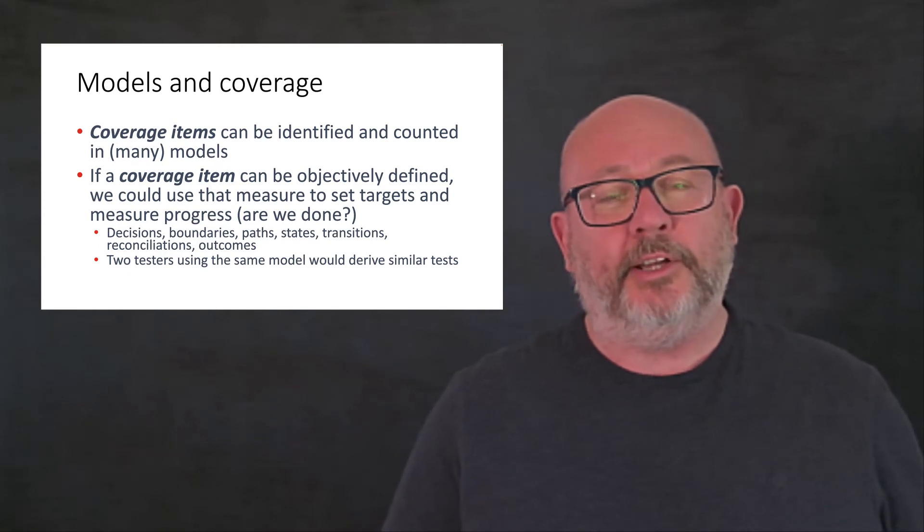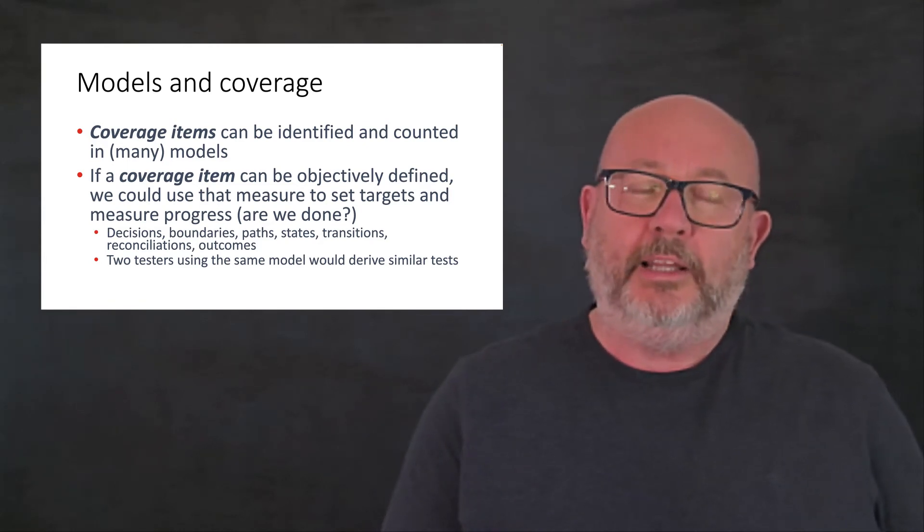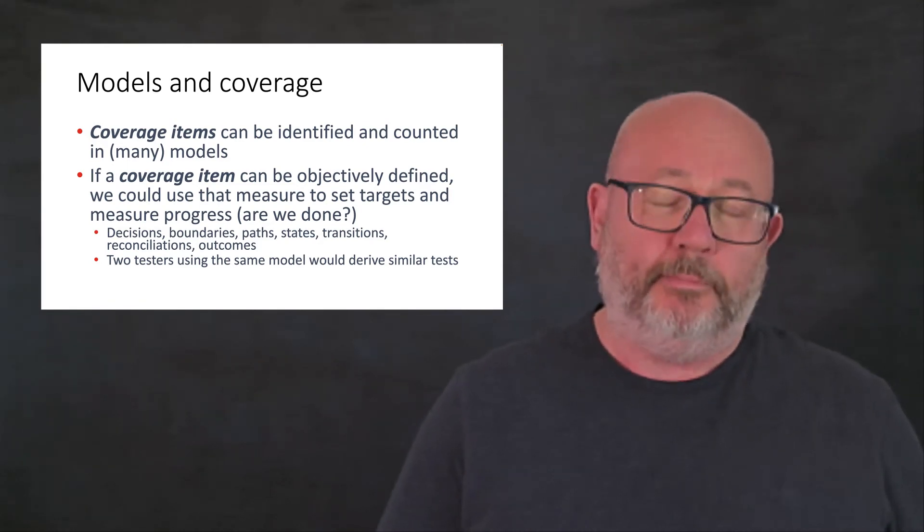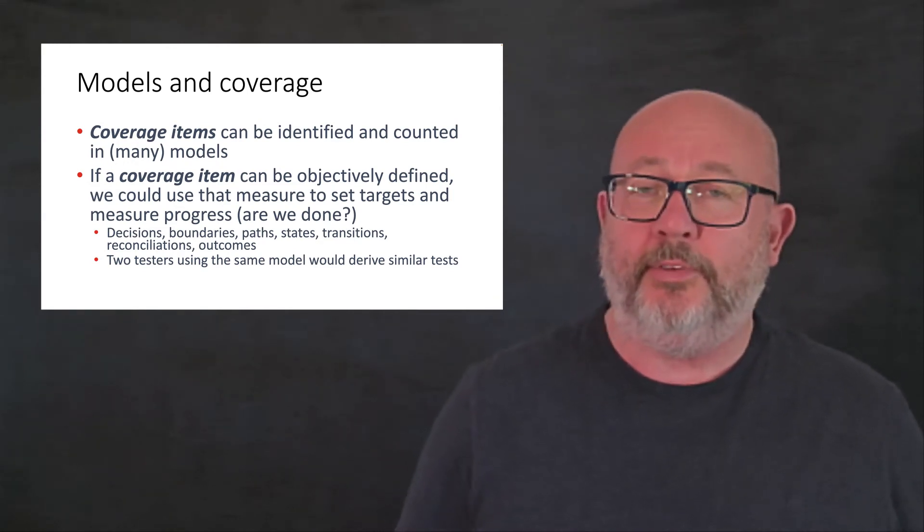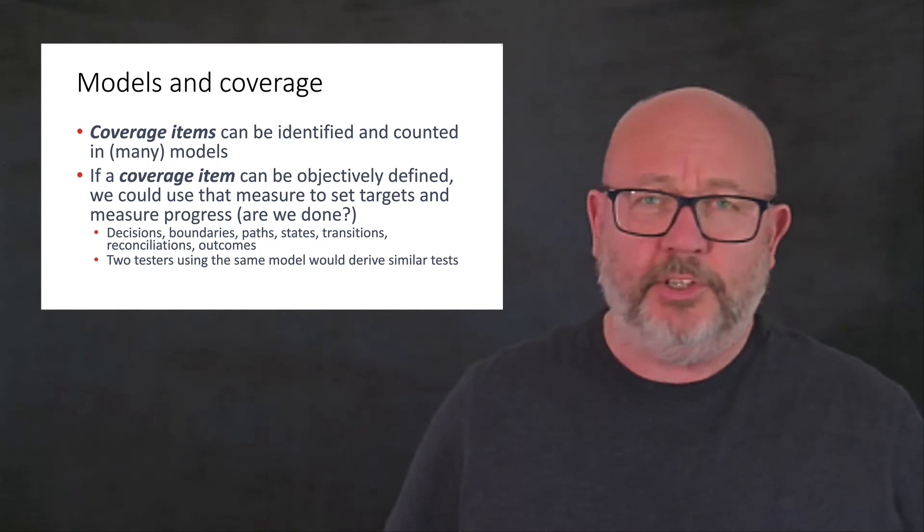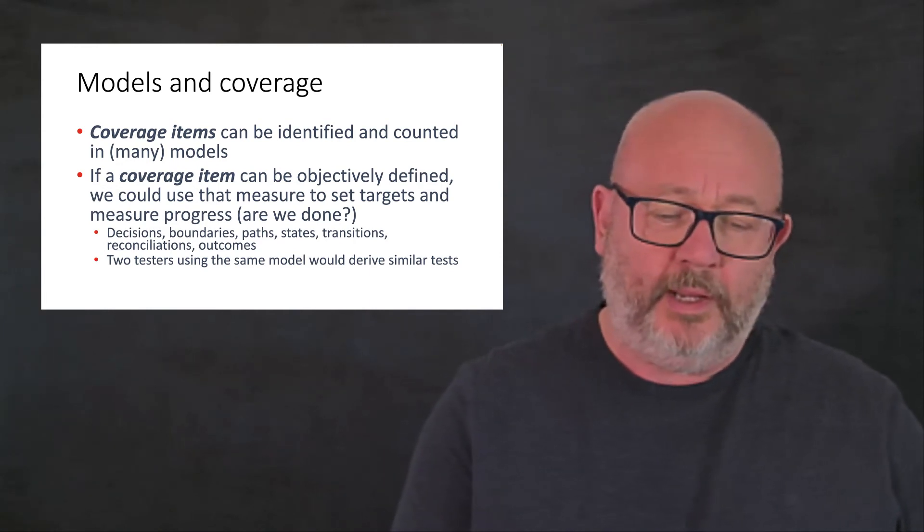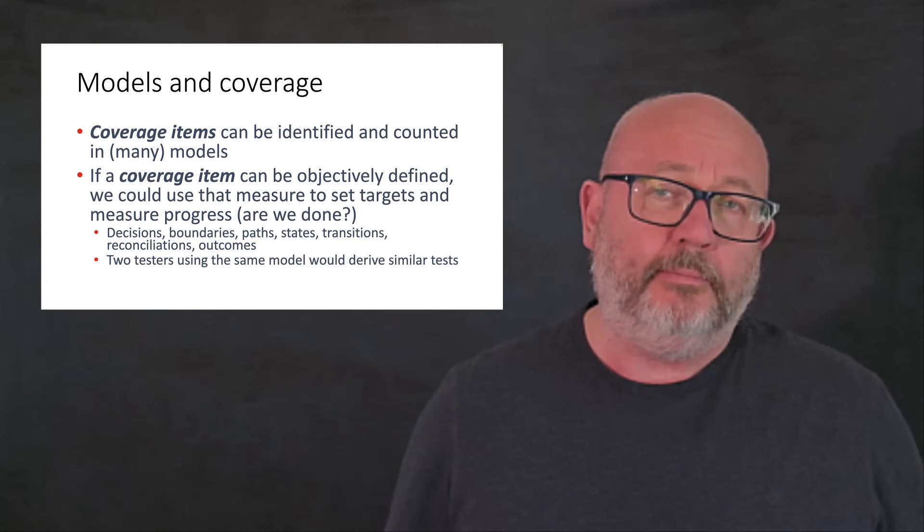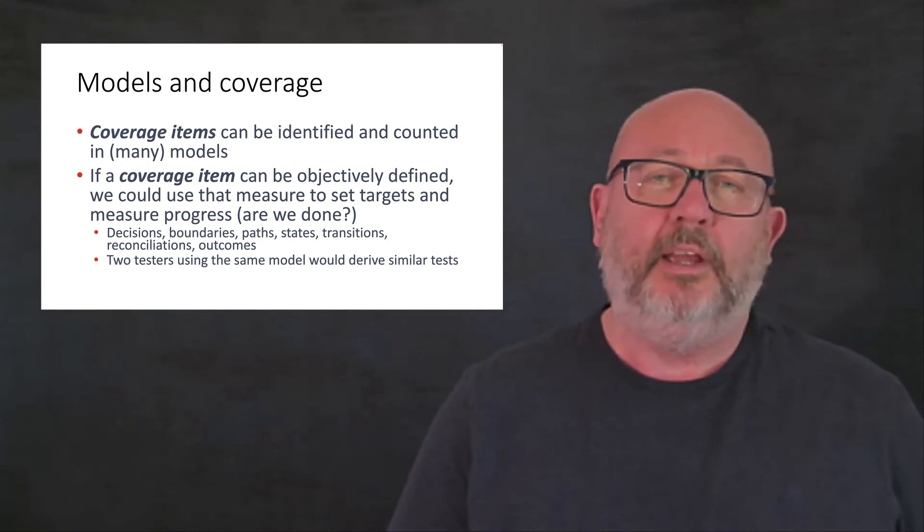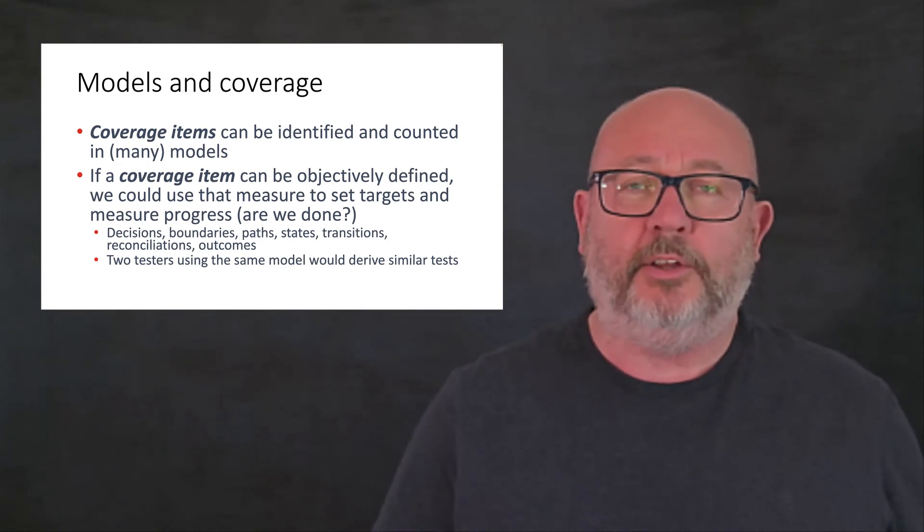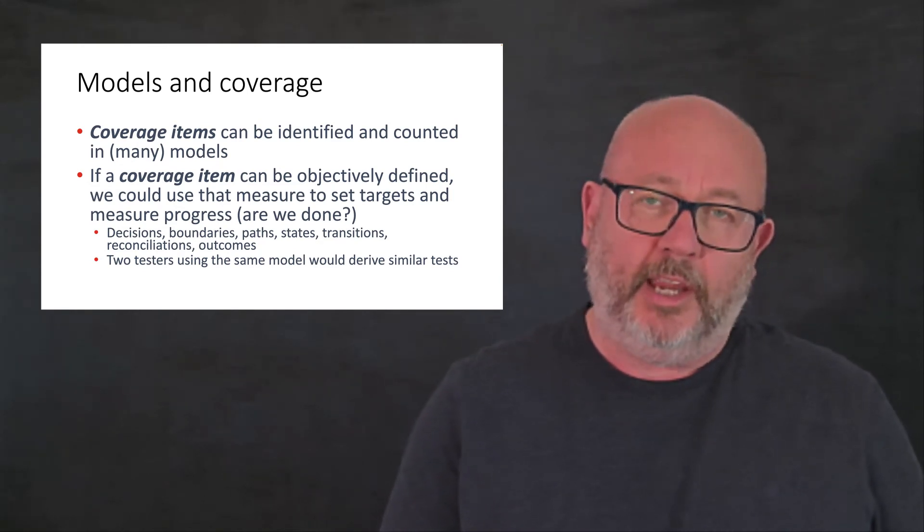What I want to say about models and coverages briefly is, if you like, if we have a graphical model, there are elements on that model that we can count. And in principle, we can set a coverage target based on whatever type of coverage item we choose to define, whether it's features and conditions identified in a requirements document or decisions or decision outcomes in a flowchart. And of course, we can look at other types of models like state transition diagrams, collaboration charts, sequence diagrams, all those kind of things. We can pick out things that we can test in those kind of models.